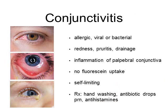Conjunctivitis is probably one of the more common causes of red eye in the wilderness. There are a few causes: allergic, viral, and bacterial. Patients present with injected or red conjunctiva and some drainage. Viral and allergic types produce clear tearing, while bacterial conjunctivitis produces purulent yellow-white discharge. Pruritus is common with allergic conjunctivitis. You can also notice inflammation of the palpebral conjunctiva on exam. There should be no fluorescent uptake on staining and the condition is usually self-limiting. Because it is hard to determine the cause in the wilderness, antibiotic drops are generally recommended, along with possible antihistamine drops, and hand washing is important to prevent spread.